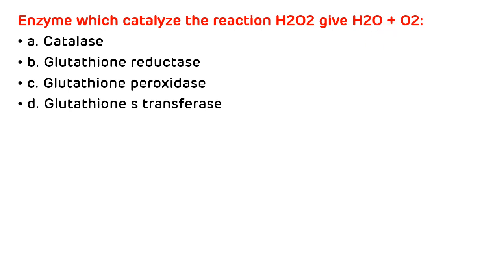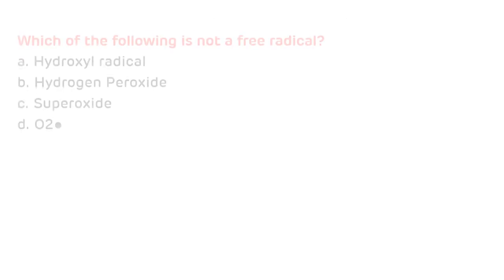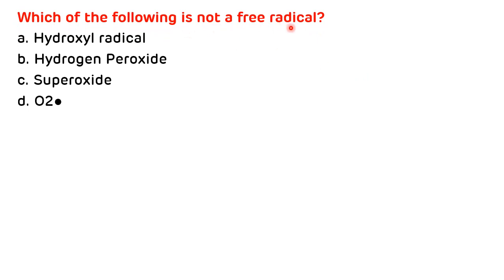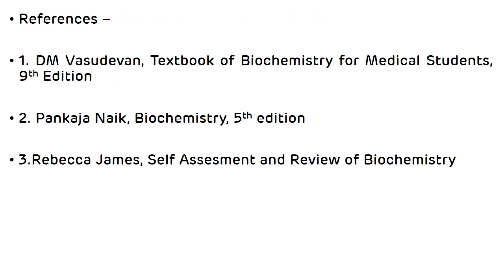Last question: which of the following is not a free radical? Options are hydroxyl radical, hydrogen peroxide, superoxide, and superoxide anion radical. The correct answer is hydrogen peroxide — it is a reactive oxygen species, not a free radical.